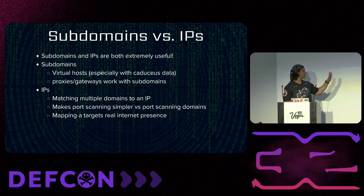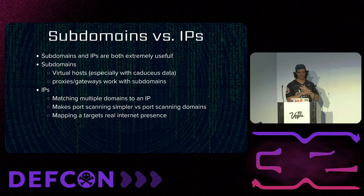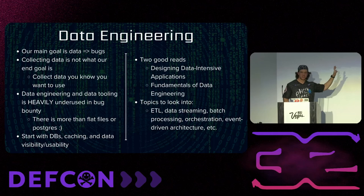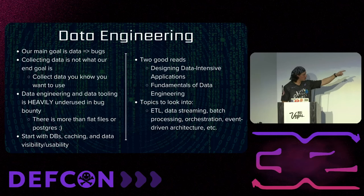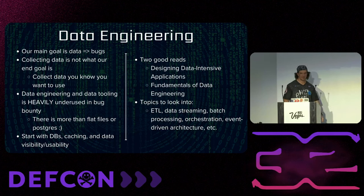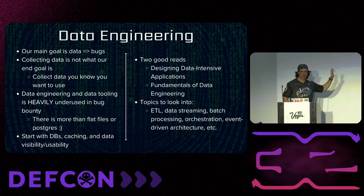On the data engineering side: subdomains versus IP addresses — they're both extremely useful. Track subdomains and IPs and cross-reference them. Do not just make subdomains your primary key in a database, and do not just make IPs. Do both. Look into data engineering. There are two books I highly recommend — both available as audiobooks on Audible. They are boring and technical, but you're going to end up with so much data. And if you don't use the data correctly — if you just put it in flat files or Postgres — you're going to regret it.